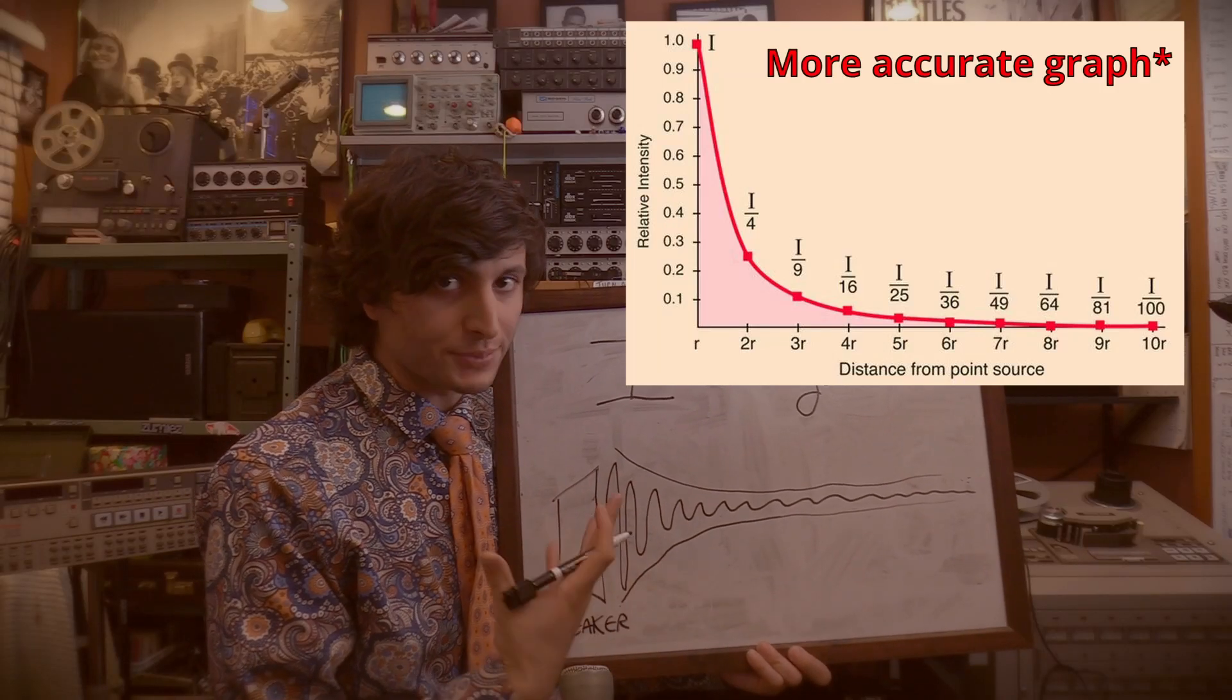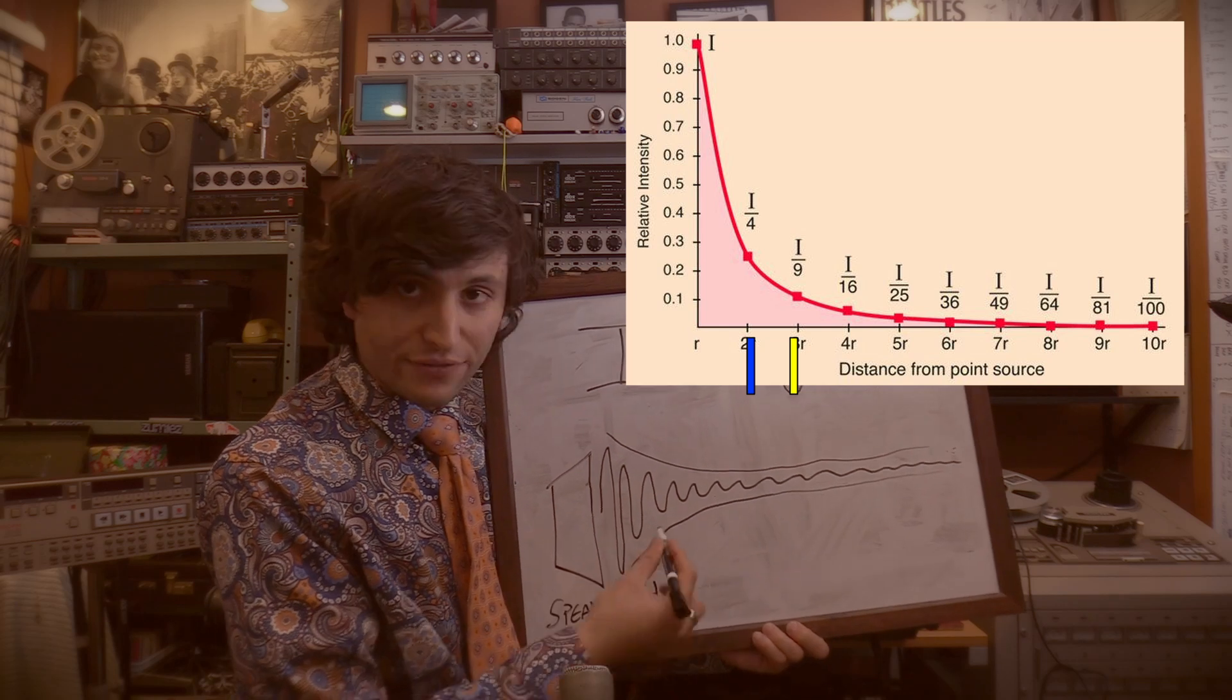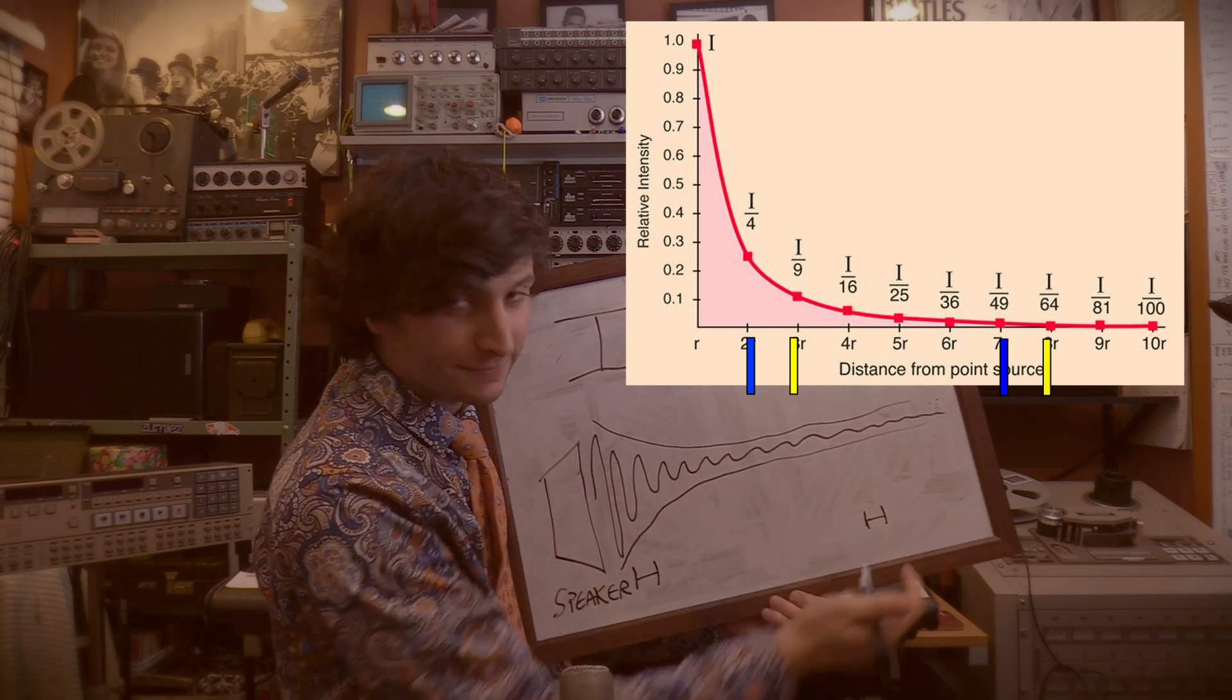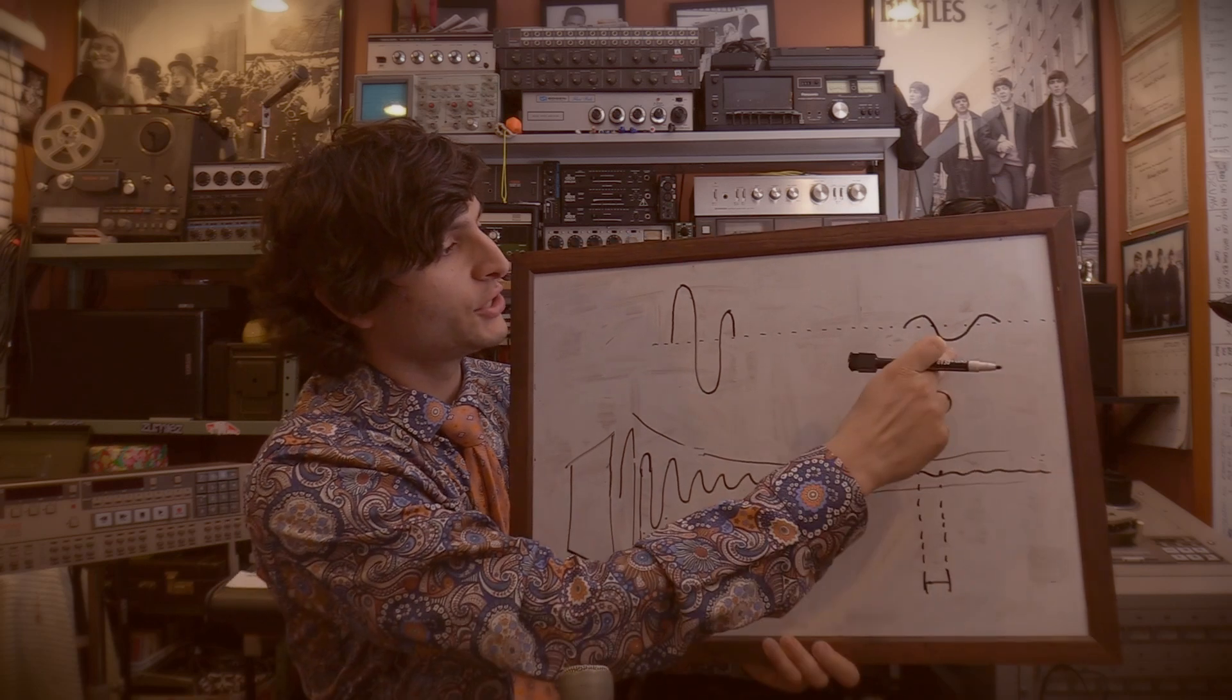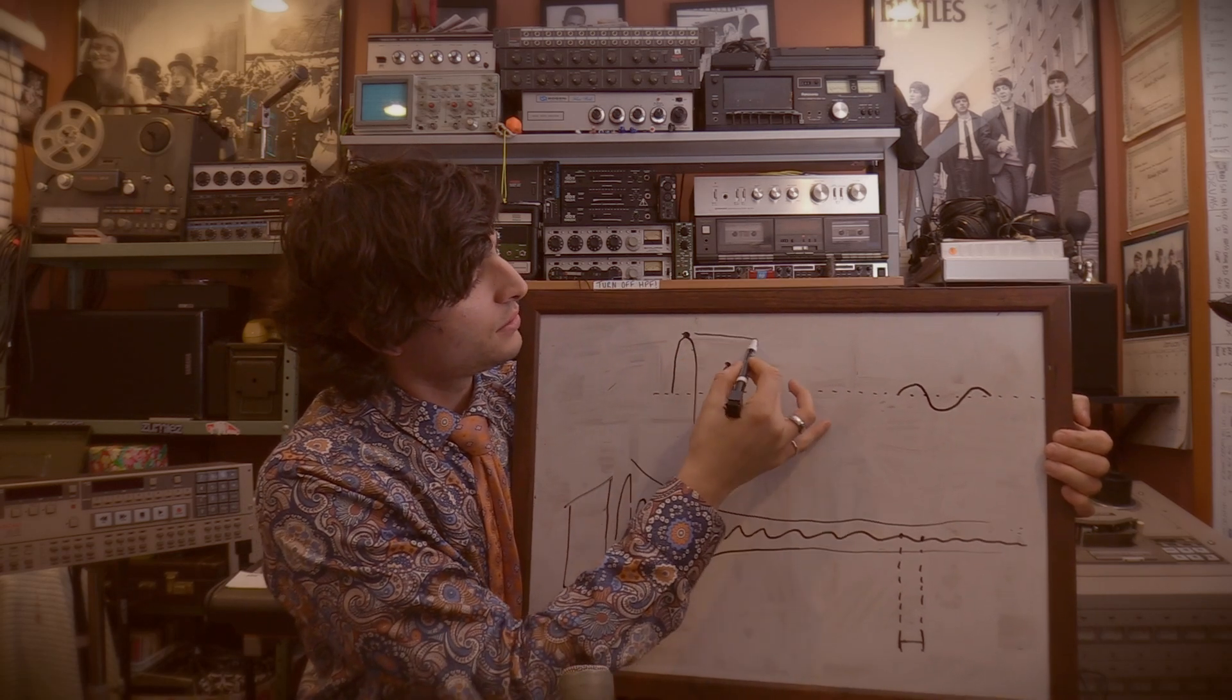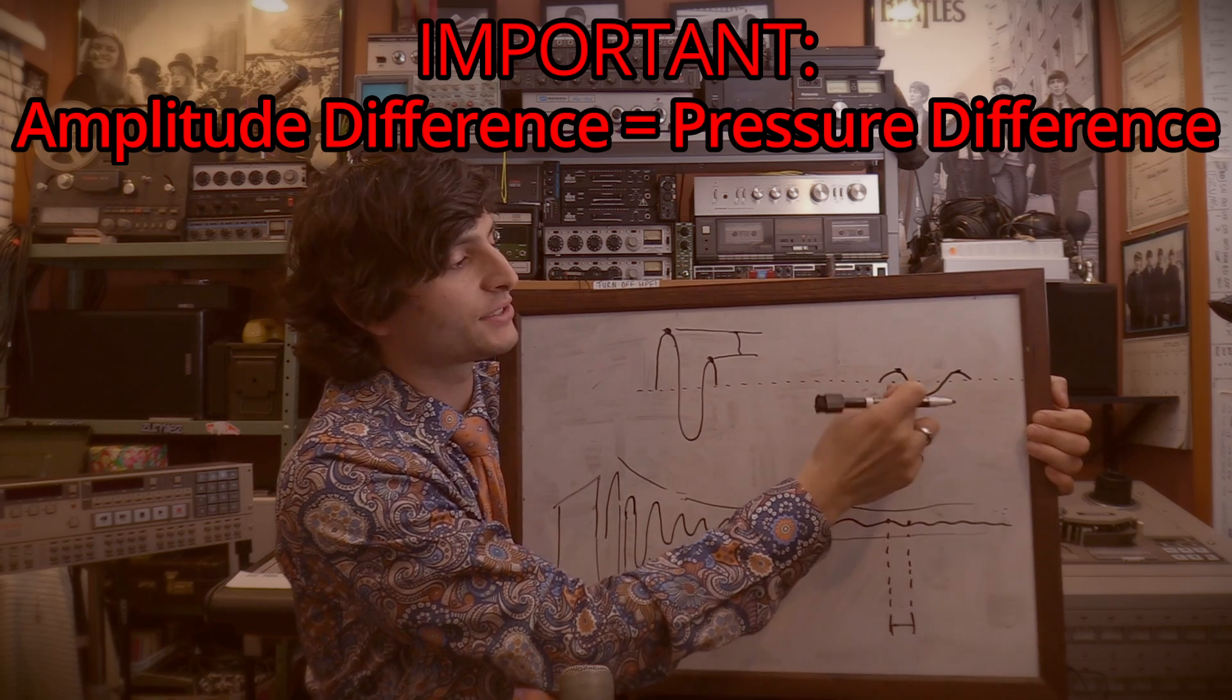Now, because the amplitude drops off as the inverse squared here, the difference between, say, point here and point here is going to be a much bigger difference in amplitude than the same distance but moved here. To further clarify, the distance I am drawing out here is the front of the ribbon microphone to the back of the ribbon microphone. So in this graph in the upper right corner, the blue line is signifying the front of the ribbon, and the yellow line is signifying the rear of the ribbon. Alright, so I blew up these two sections of the same distance of this sound wave and put them up here. If you compare the tops of each of these waves, you will see that for this one, the difference in amplitude is much greater than the difference in amplitude for these two crests of the sound wave.